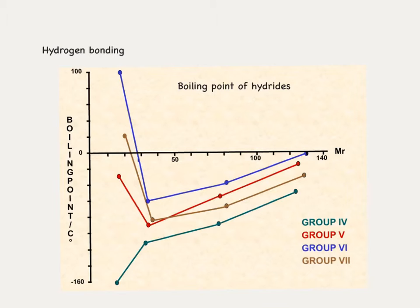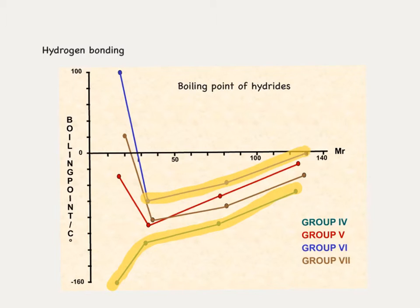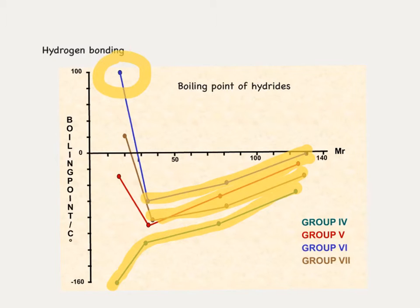Finally, we look at hydrogen bonding, starting with the boiling points of the hydrides. The group 4 hydrides show boiling points that increase with molecular size due to greater van der Waals forces. The group 5, 6, and 7 hydrides follow a similar trend except for water (H₂O), hydrogen fluoride (HF), and ammonia (NH₃) — all of which have higher boiling points than expected based on van der Waals alone, indicating another intermolecular force at work.